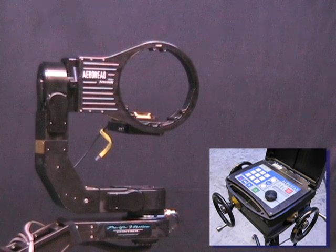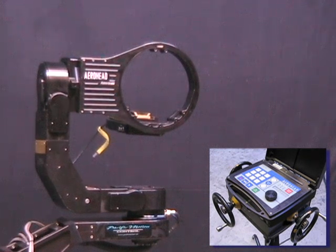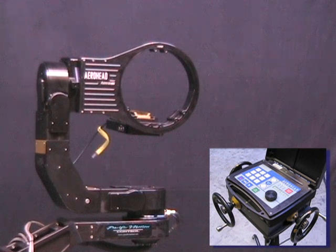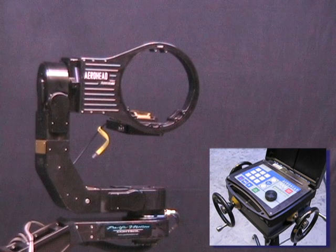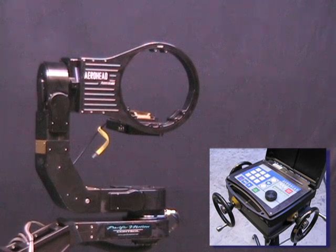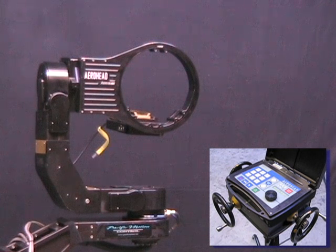The controls are very simple for the Arrowhead, and I'm going to demonstrate those for you now. To turn the unit on, there's just a single power switch on the power supply, and you'll notice the controls will go through a boot sequence and the wheels at this point are ready. They're live.